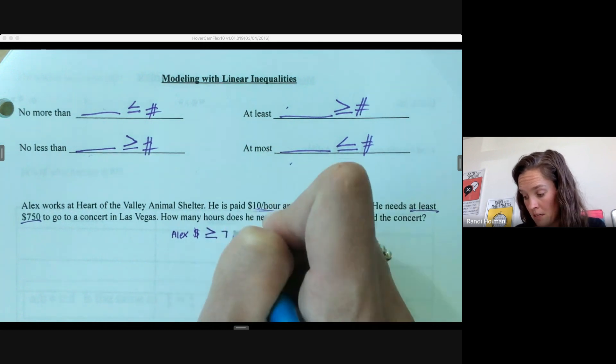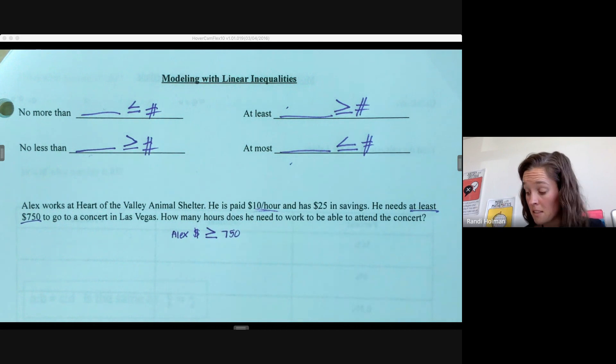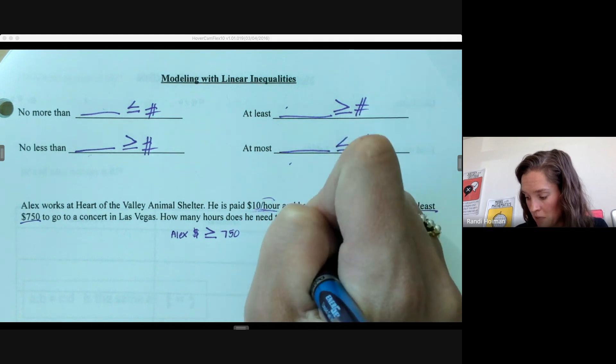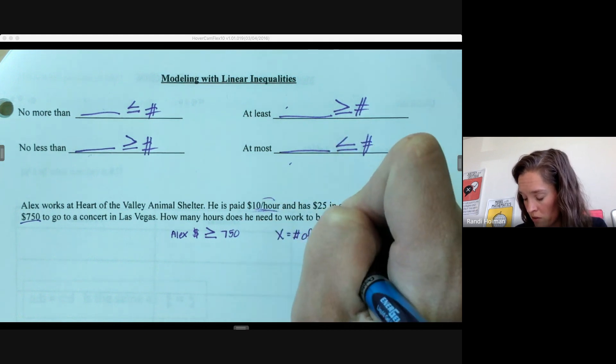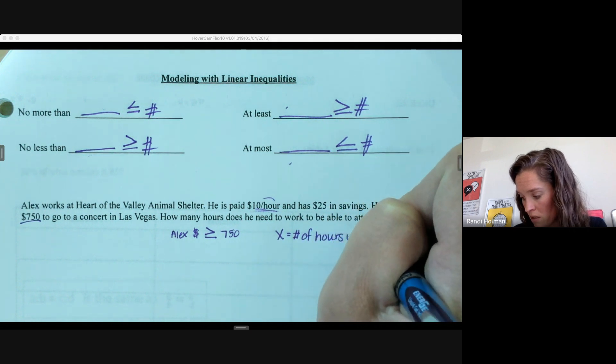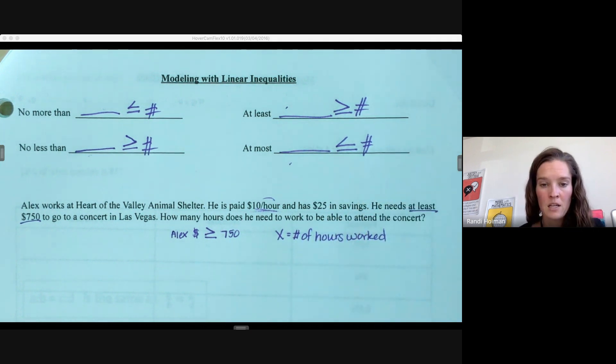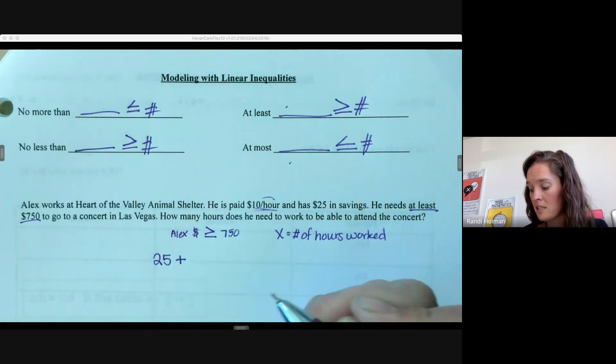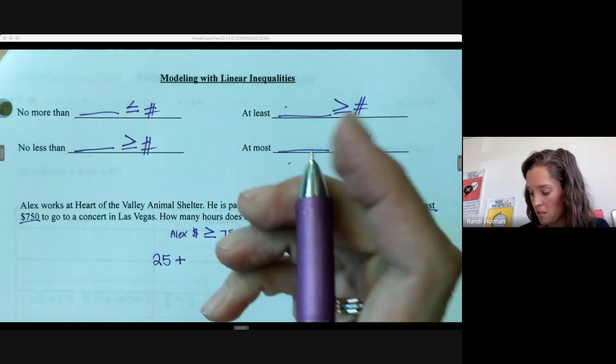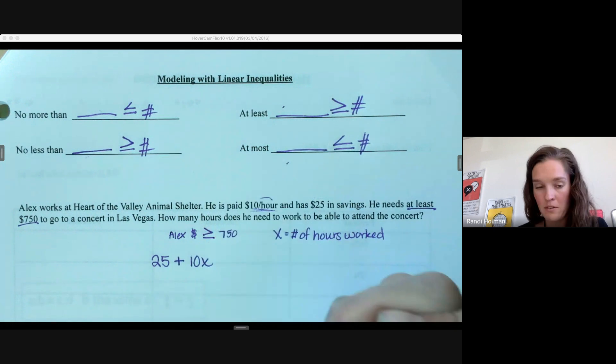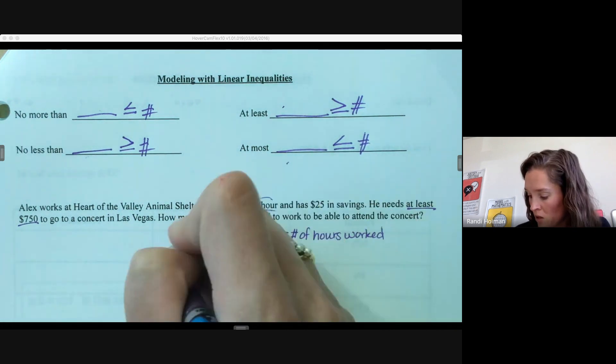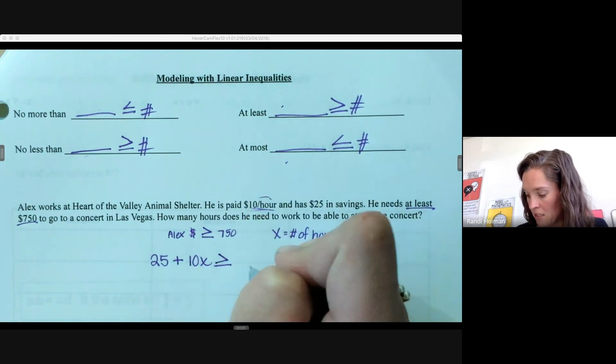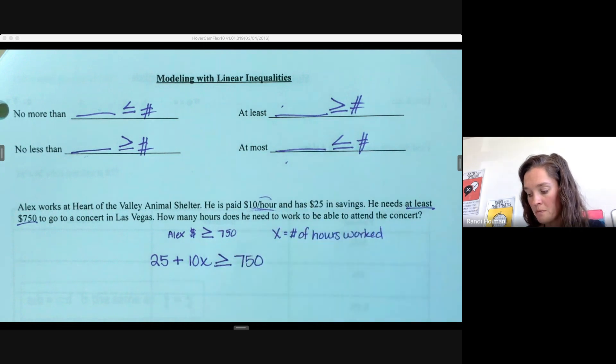That's our thought process. What's changing Alex's money? How long he works. So our variable is going to be the number of hours worked. We already know he has $25—that's not changing, that's a constant. Plus, he's earning $10 for each hour he works. $10 times the number of hours will tell us how much money he earns. His money—what he has saved plus what he's earning—has to be at least $750.